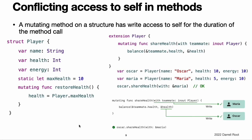Conflicting access to self in methods. A mutating method on a structure has write access to self for the duration of the method call. For example, consider a game where each player has a health amount, which decreases when taking damage, and an energy amount, which decreases when using special abilities. In the restoreHealth method, a write access to self starts at the beginning of the method and lasts until the method returns. In this case, there is no other code inside restoreHealth that could have an overlapping access to the properties of a player instance. The shareHealth method takes another player instance as an in-out parameter, creating the possibility of overlapping accesses.